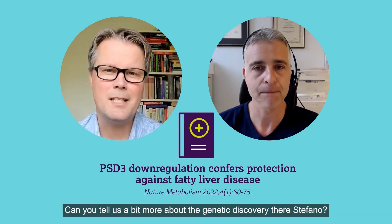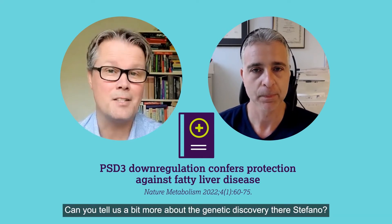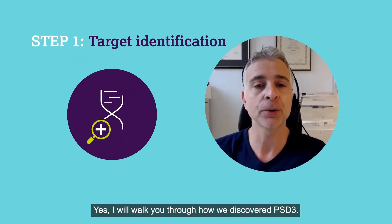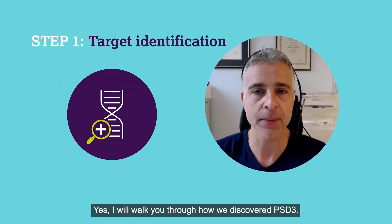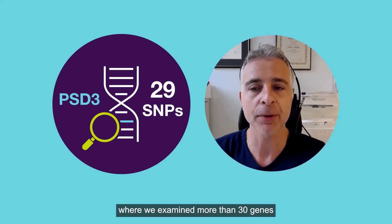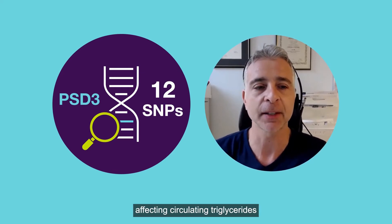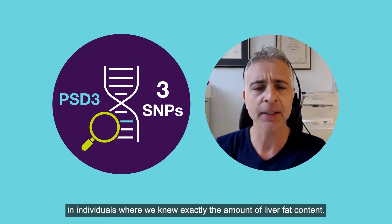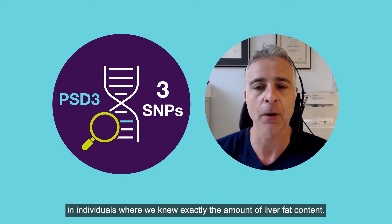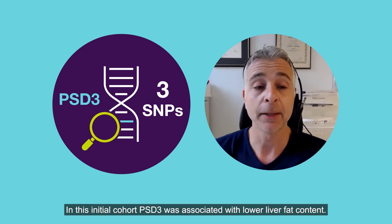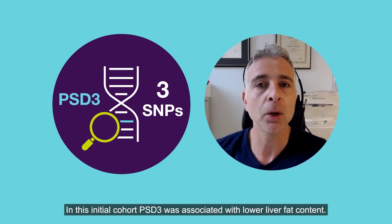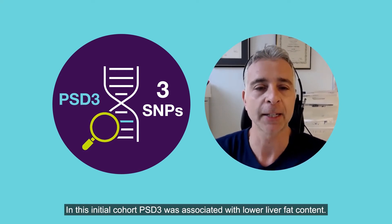Can you tell us a bit more about the genetic discovery there, Stefano? Yes, I will walk you through how we discovered PSD3. We started with a candidate gene approach where we examined more than 30 genes affecting circulating triglycerides in individuals where we knew exactly the amount of liver fat content. In this initial cohort, PSD3 was associated with lower liver fat content.